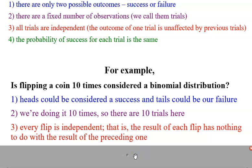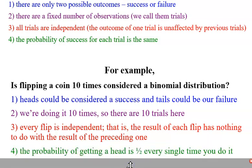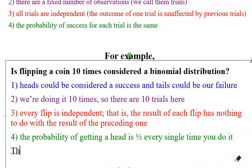The probability of success for each trial is the same. Every time I flip, let's say I'm trying to get heads. Every time I flip a coin, there's only two outcomes - heads or tails - but only one of them is heads. So one out of two is going to be the probability. The probability of getting heads is one half every single time you do it. So with all this being said, it is a binomial distribution. We've satisfied all the steps there.